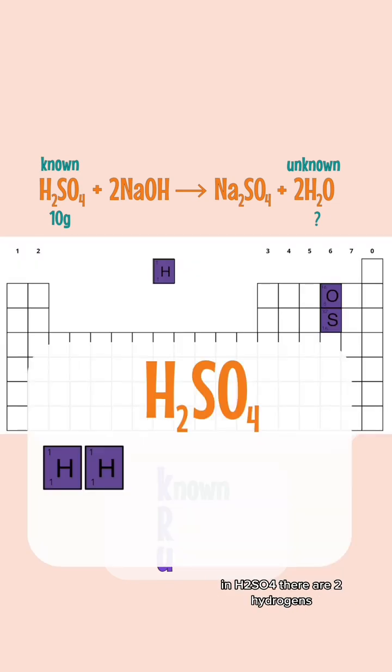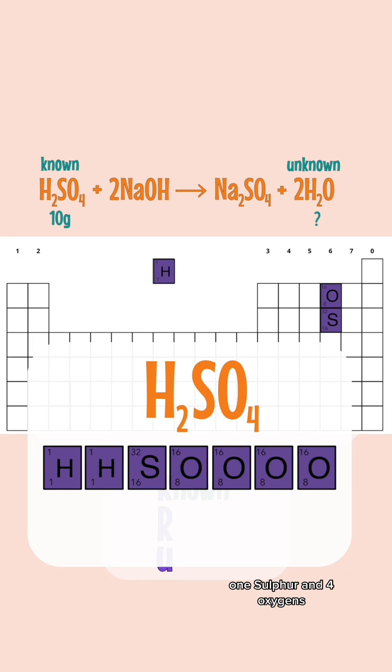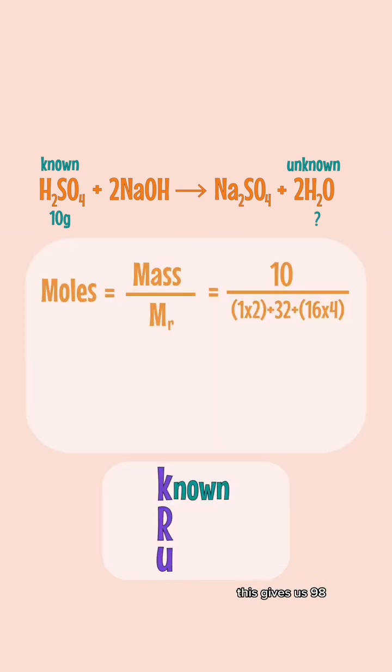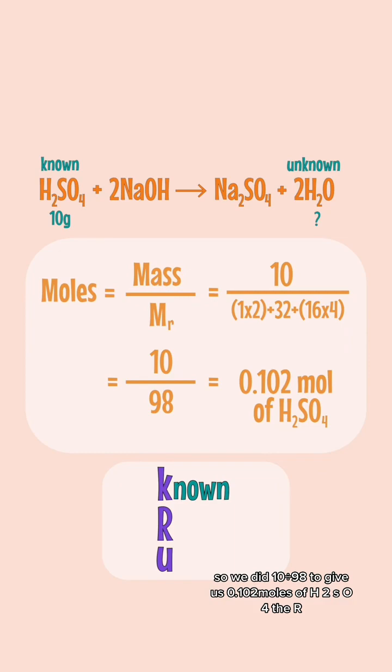In H2SO4 there are two hydrogens, one sulfur and four oxygens. Now add up the relative atomic masses of all of these which is 1 plus 1 plus 32 plus 4 times 16. This gives us 98 so we do 10 divided by 98 to give us 0.102 moles of H2SO4.